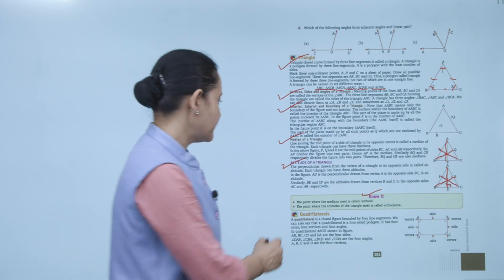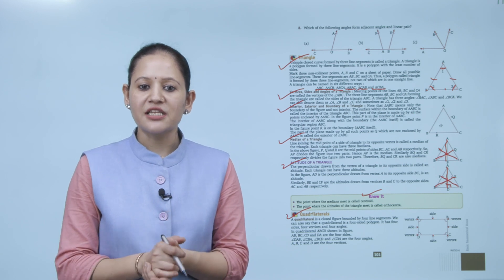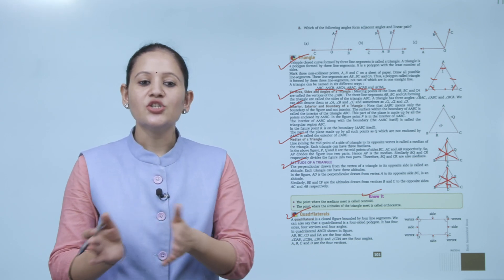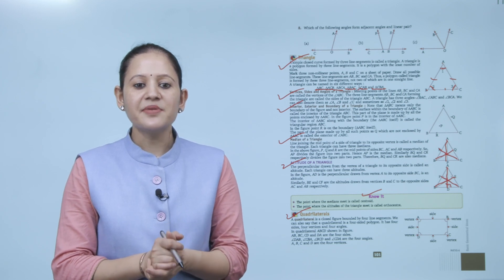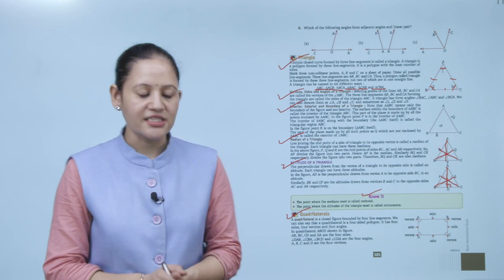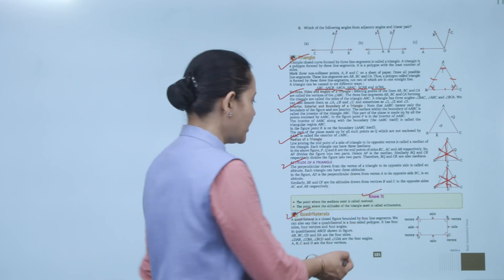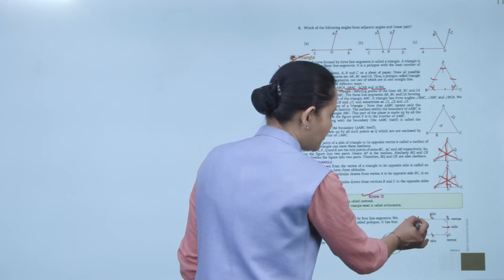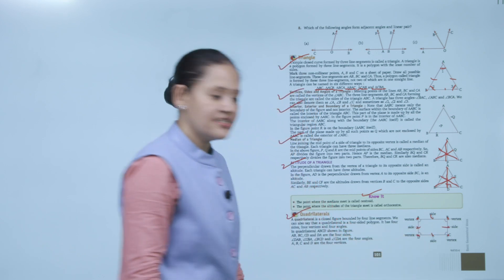Next is quadrilaterals. A quadrilateral is a closed figure bounded by 4 line segments — it is a 4-sided polygon with 4 sides, 4 vertices, and 4 angles. In quadrilateral ABCD, the sides are AB, BC, CD, and DA; the angles are ∠DAB, ∠CBA, ∠BCD, and ∠CDA; and the vertices are A, B, C, and D.